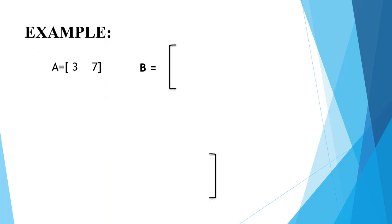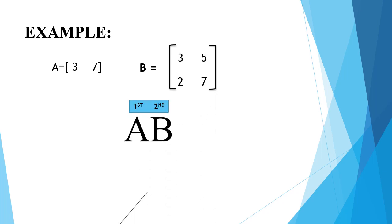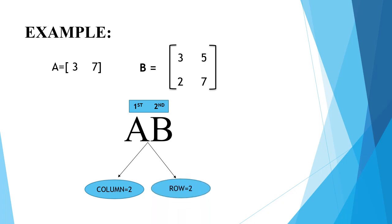Example: matrix A has two columns and one row, while matrix B has two rows and two columns. Now you have to check the columns of matrix A and rows of matrix B. Matrix A has two columns and matrix B has two rows, so the number of columns equals the number of rows, so it is conformable for multiplication.